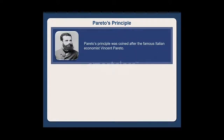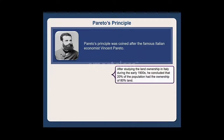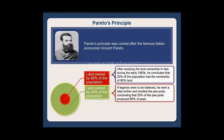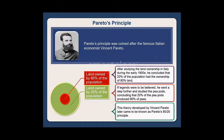Pareto's principle was coined after the famous Italian economist Vilfredo Pareto. After studying land ownership in Italy during the early 1900s, he concluded that 20% of the population had ownership of 80% of the land. If legends were to be believed, he went a step further and studied pea pods, concluding that 20% of the pea pods produced 80% of peas. This theory later came to be known as Pareto's 80-20 principle.